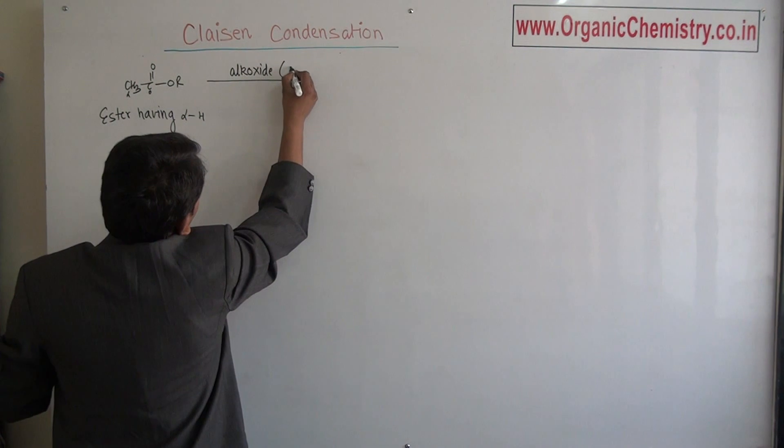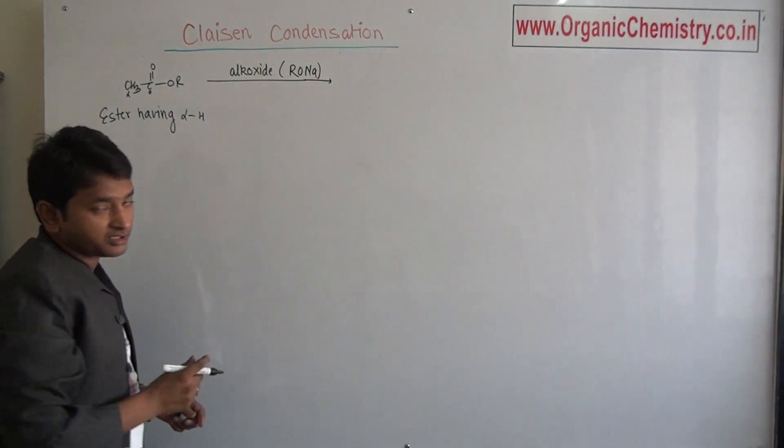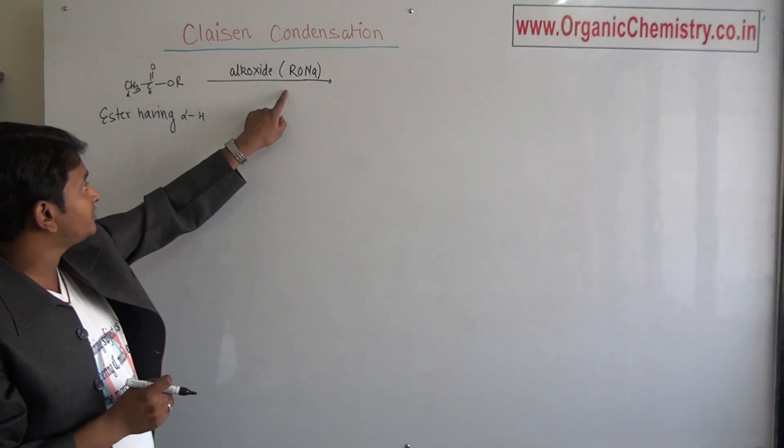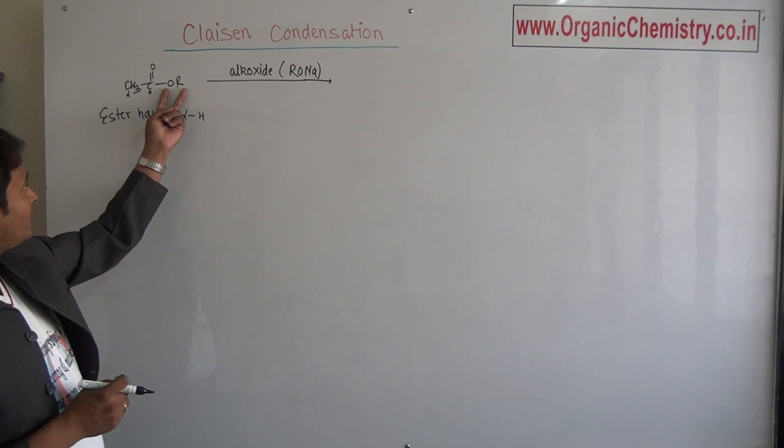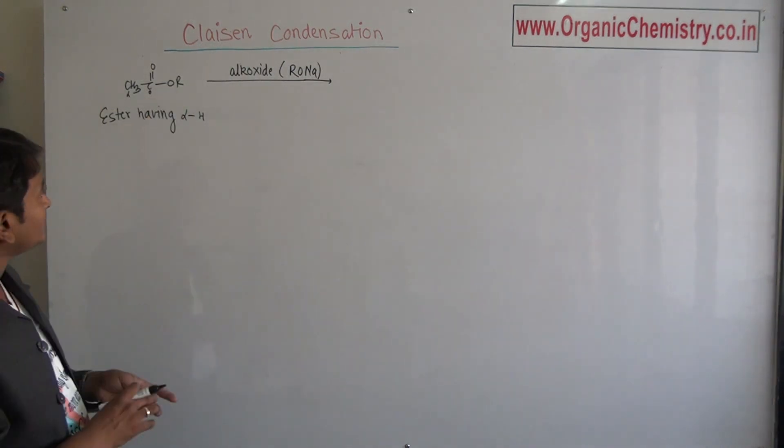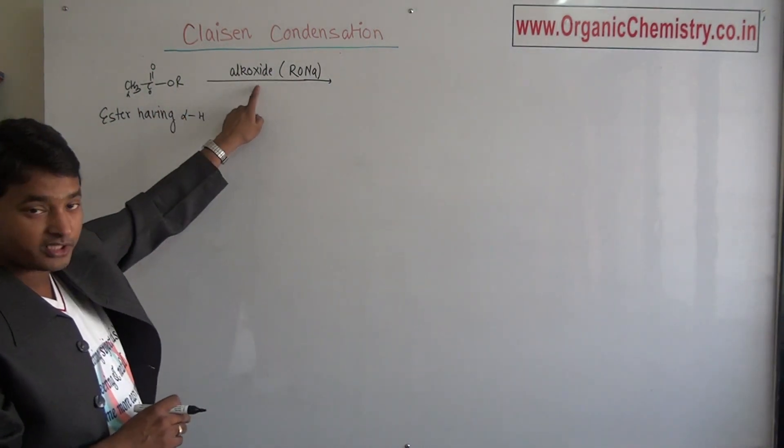Let it be R-O-Na. But the important part is this: alkoxide must be that one which is having same alkoxy part that of ester. That is, ester having alpha hydrogen on treatment with alkoxide.